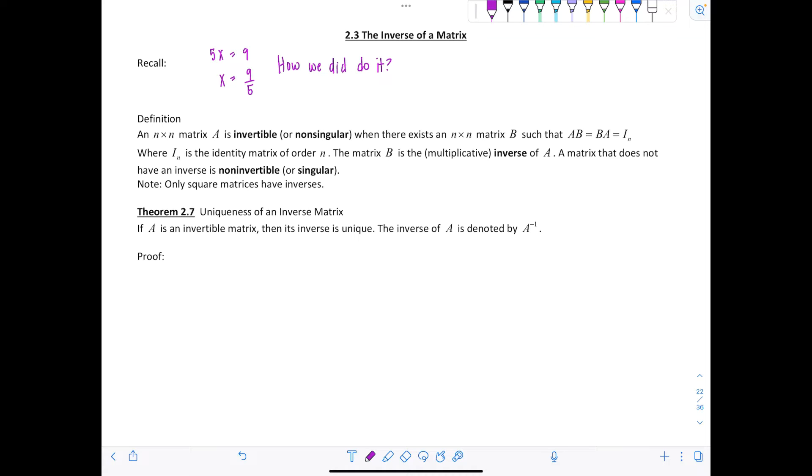We applied the inverse operation of multiplication to both sides of the equation. Notice to isolate x or to get it by itself, we have to undo the operation on the left hand side, namely multiplication by 5. We utilized the inverse of multiplication, which is division.